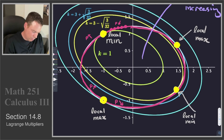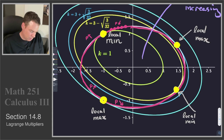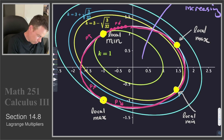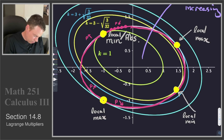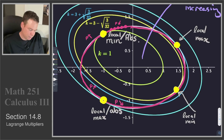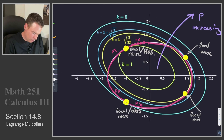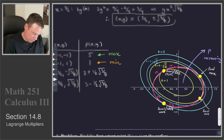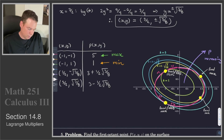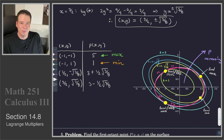Looking at the level curves for all four points, the smallest level curve is k equals 1, making that local minimum also an absolute minimum. The point on the k equals 5 level curve is not just a local max but also the absolute maximum. We can read this information directly from the level curve diagram. That's it for this example — check out the next videos for more Lagrange multipliers examples.